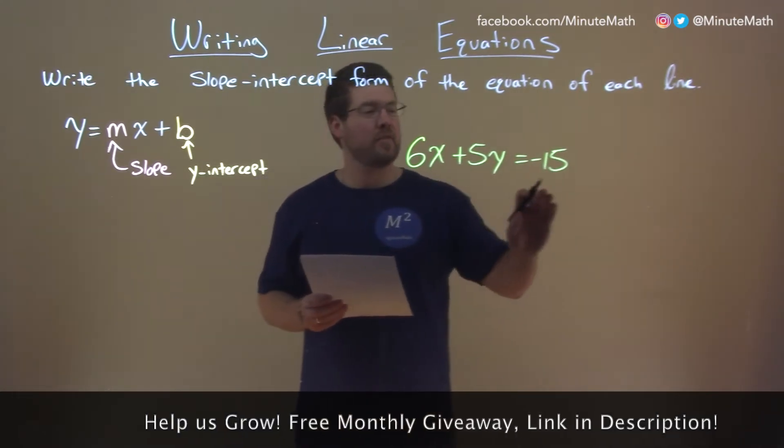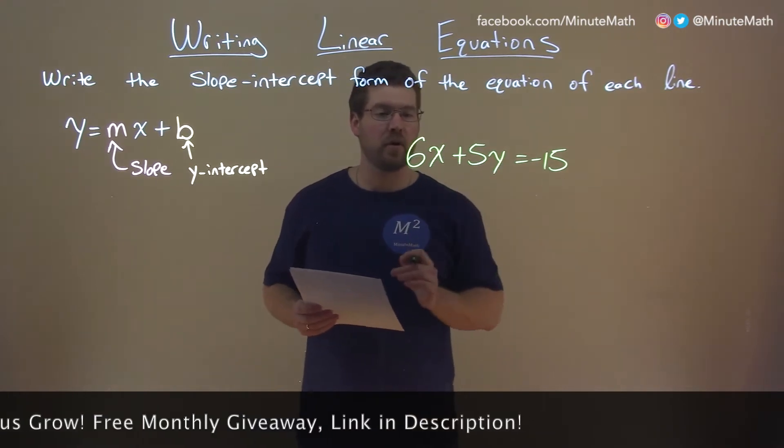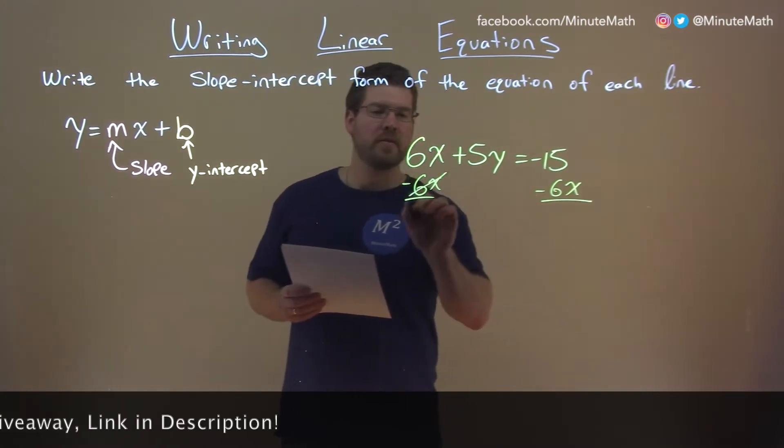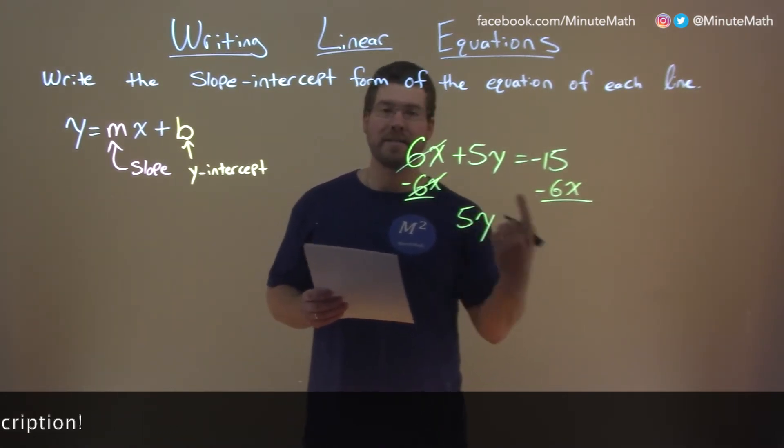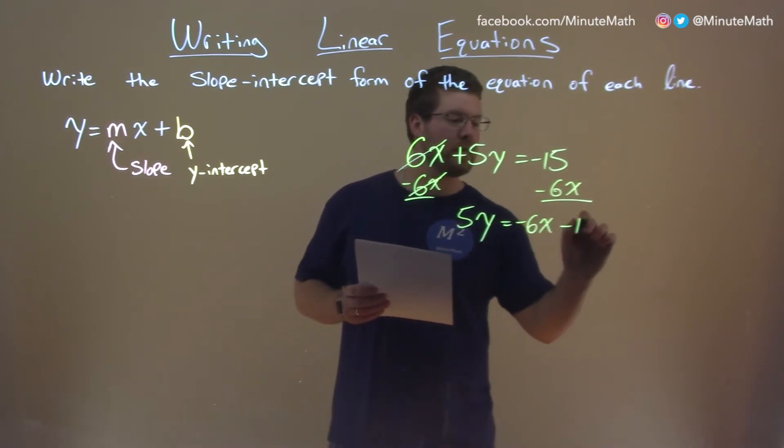let's get the 6x to the other side. Remember, y by itself is our goal. Subtract the 6x here. The 6x's cancel and we're left with 5y by itself on the left equals negative 6x minus 15.